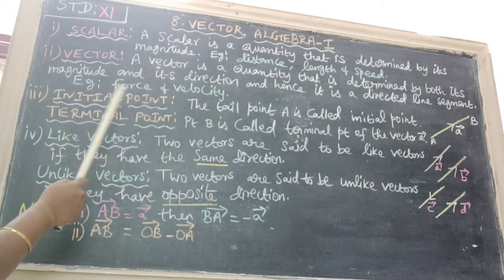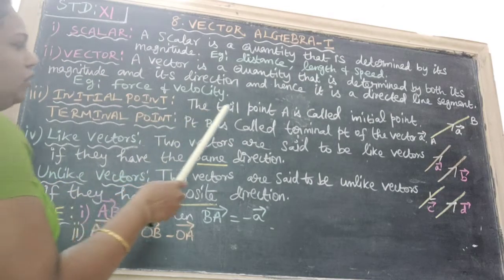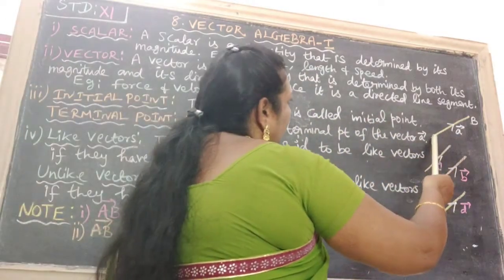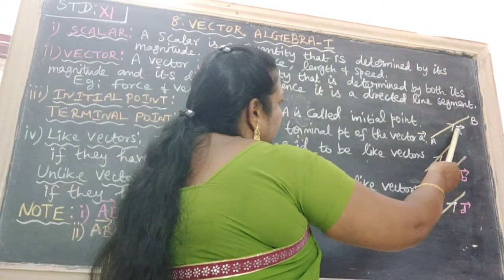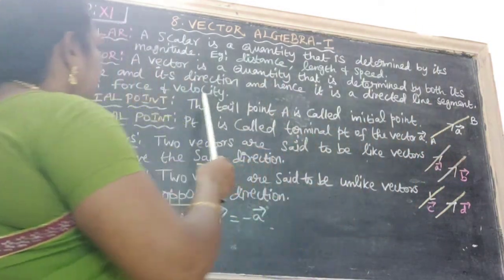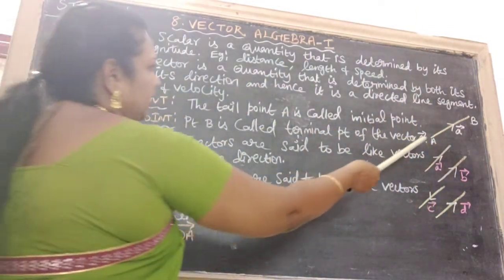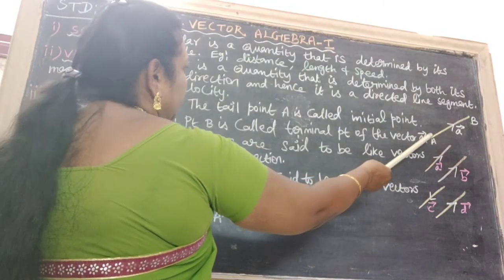Third one is initial point. We see the figure A to B, the vector is A vector. Here the tail point A is tail, tail point A is called initial point.